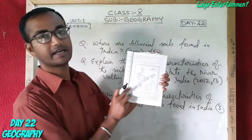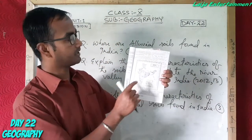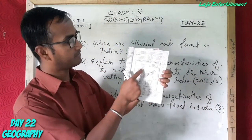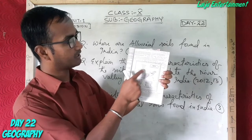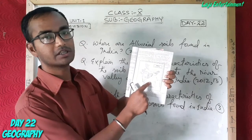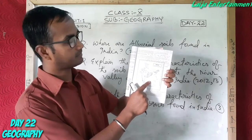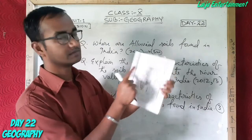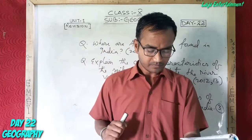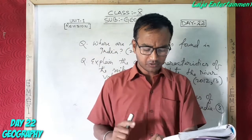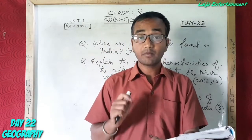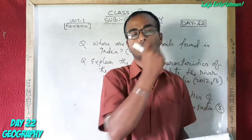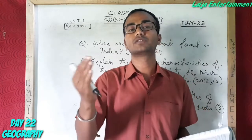This is the map, or the map of the location where all the alluvial soils are found. They also extend through a narrow belt in Rajasthan and Gujarat.